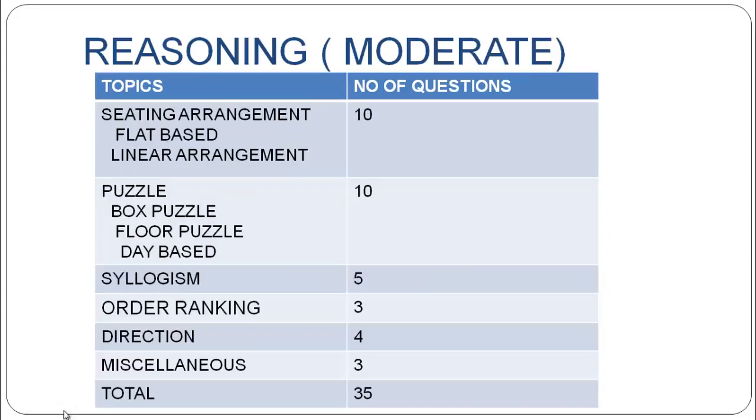Let's proceed towards the reasoning section. For reasoning, the level was of moderate level. Seating arrangement was asked on basis of two types. One flat-based and one linear arrangement. In flat-based, there were 3 floors and 2 flats, namely something like that arrangement. 3, 2, 1 floors, and flats were A and B. And linear arrangement was north and south-facing.